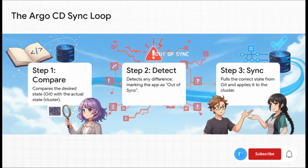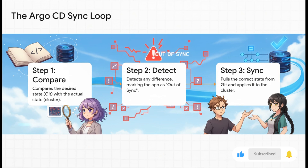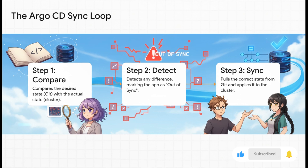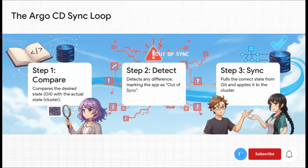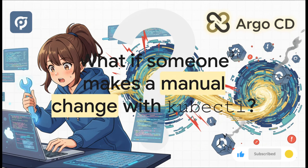So how does ArgoCD enforce this rule? It's constantly running a simple three-step loop, 24/7. First, it looks at the desired state — what's in Git — and compares it to the actual state — what's live in the cluster. Second, if it spots any difference at all, it immediately flags that application as being out of sync. Third, it just fixes it: it automatically pulls the correct state from Git and applies it, snapping the cluster right back into line.